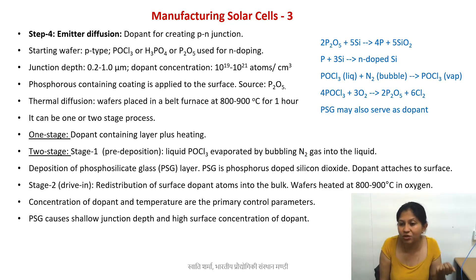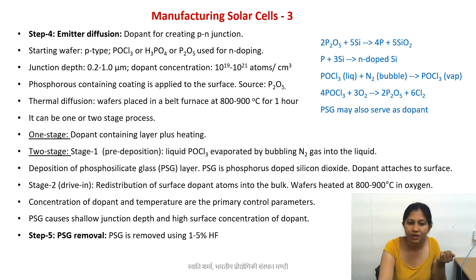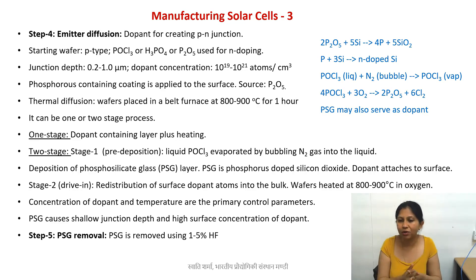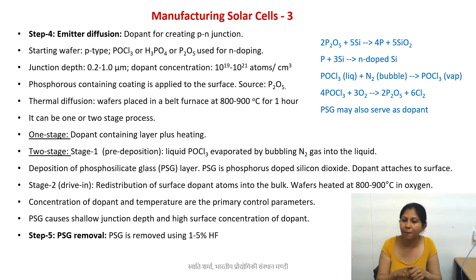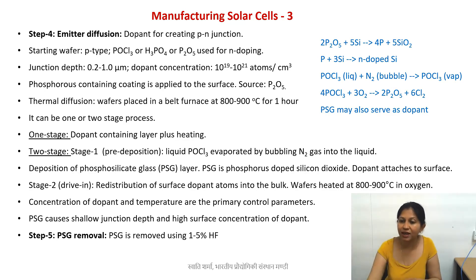That brings us to step five of our manufacturing process, known as phosphosilicate glass removal. This is typically very simple: you take hydrofluoric acid — the most common process — at one to five percent concentration, which can actually etch away your phosphosilicate glass.